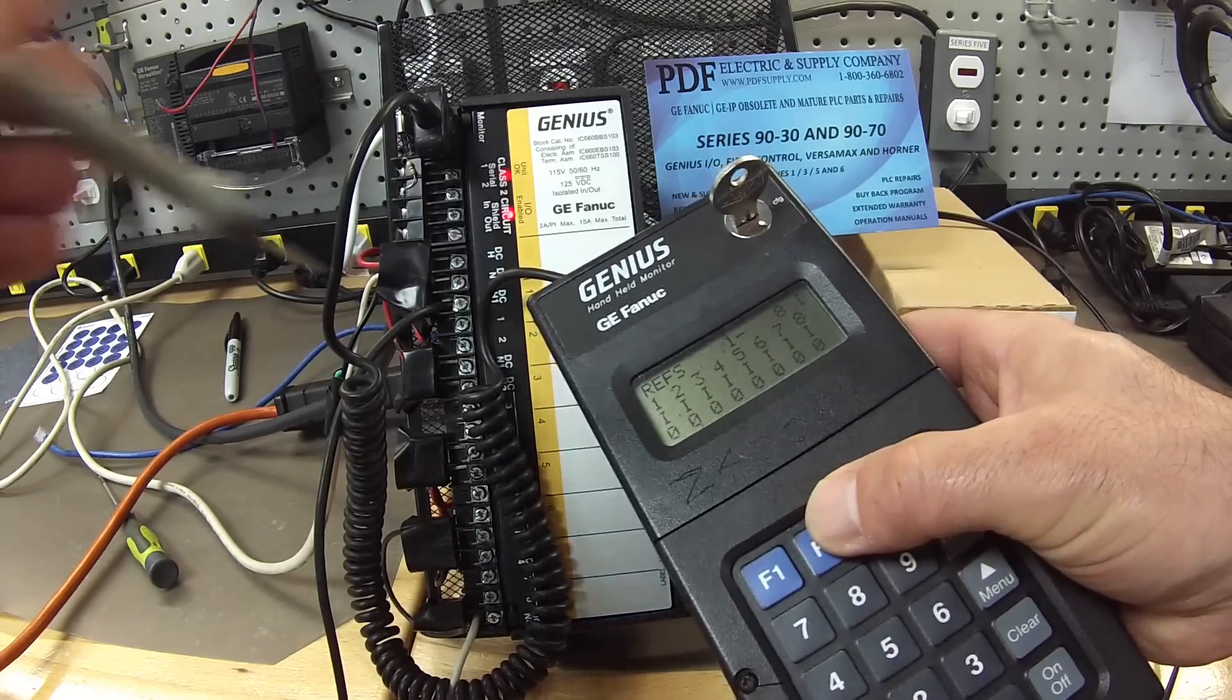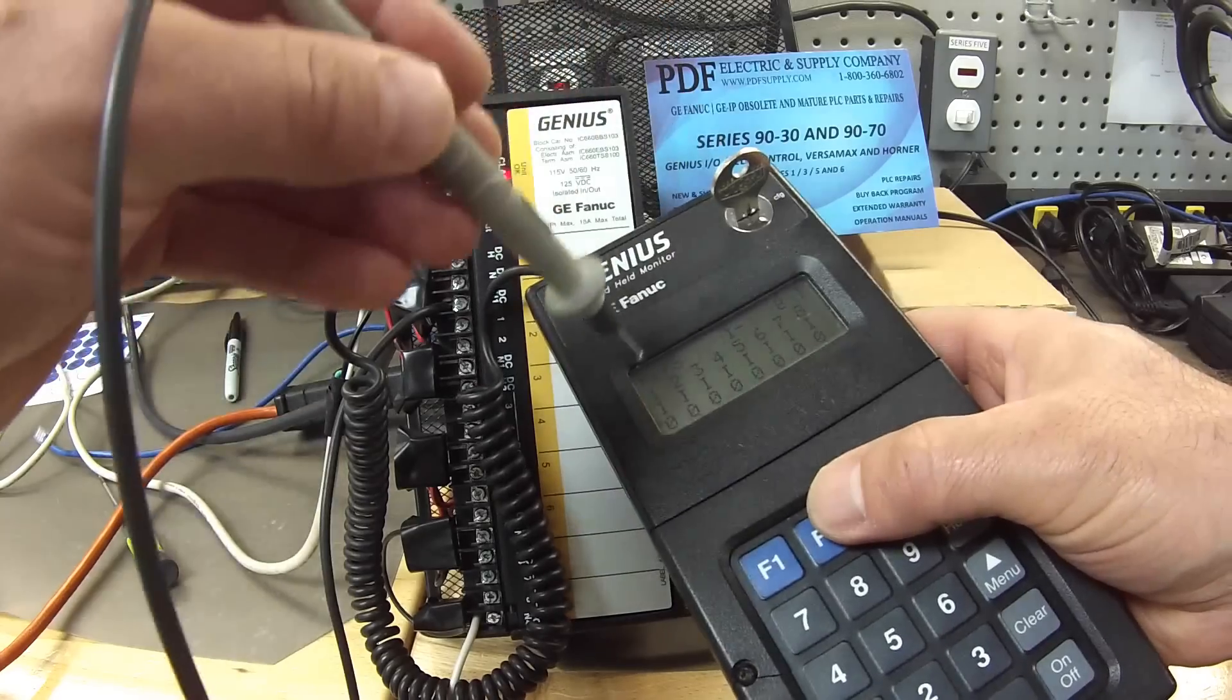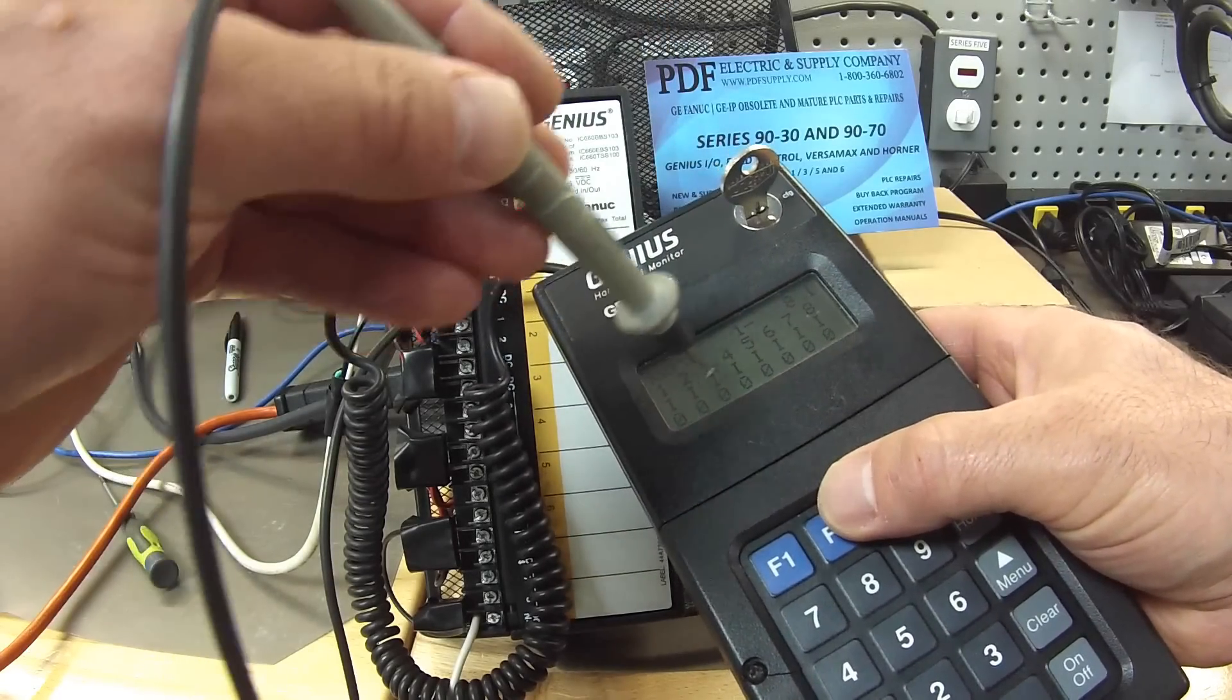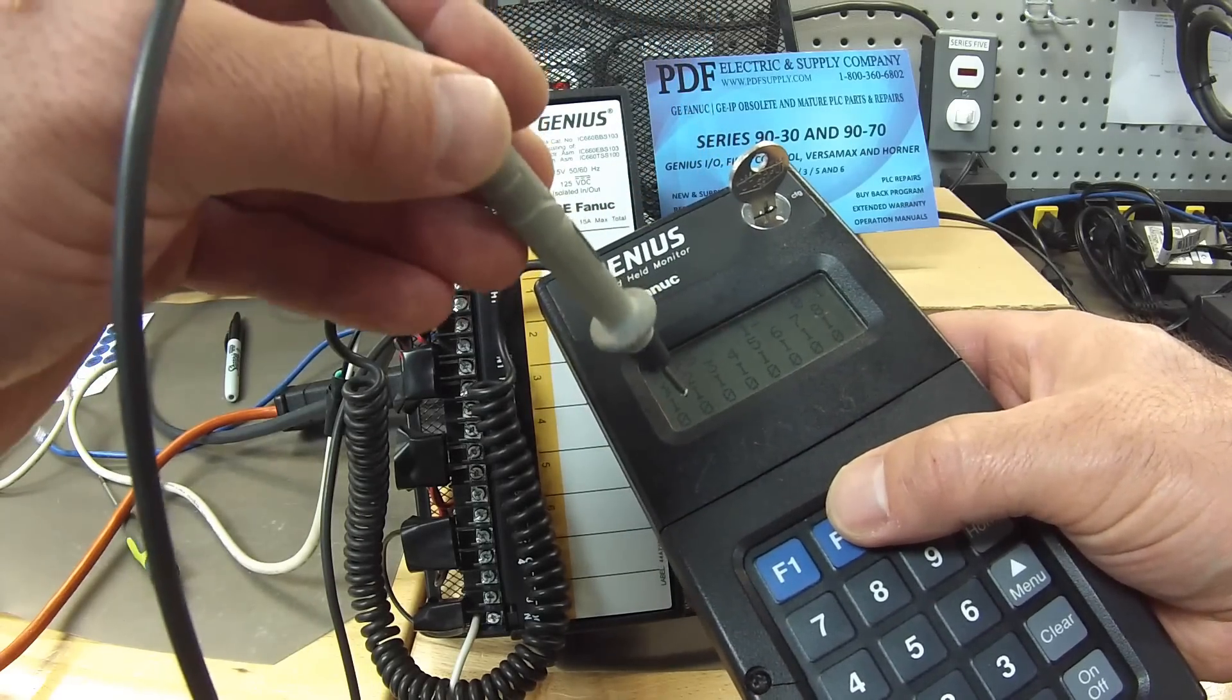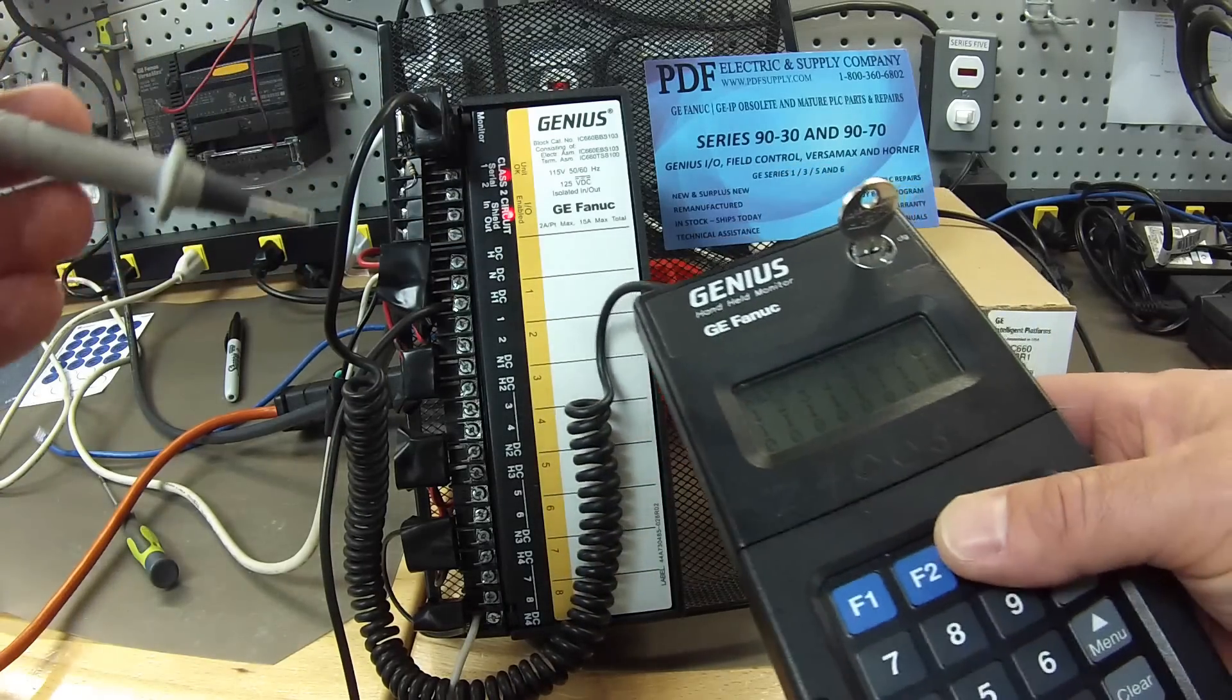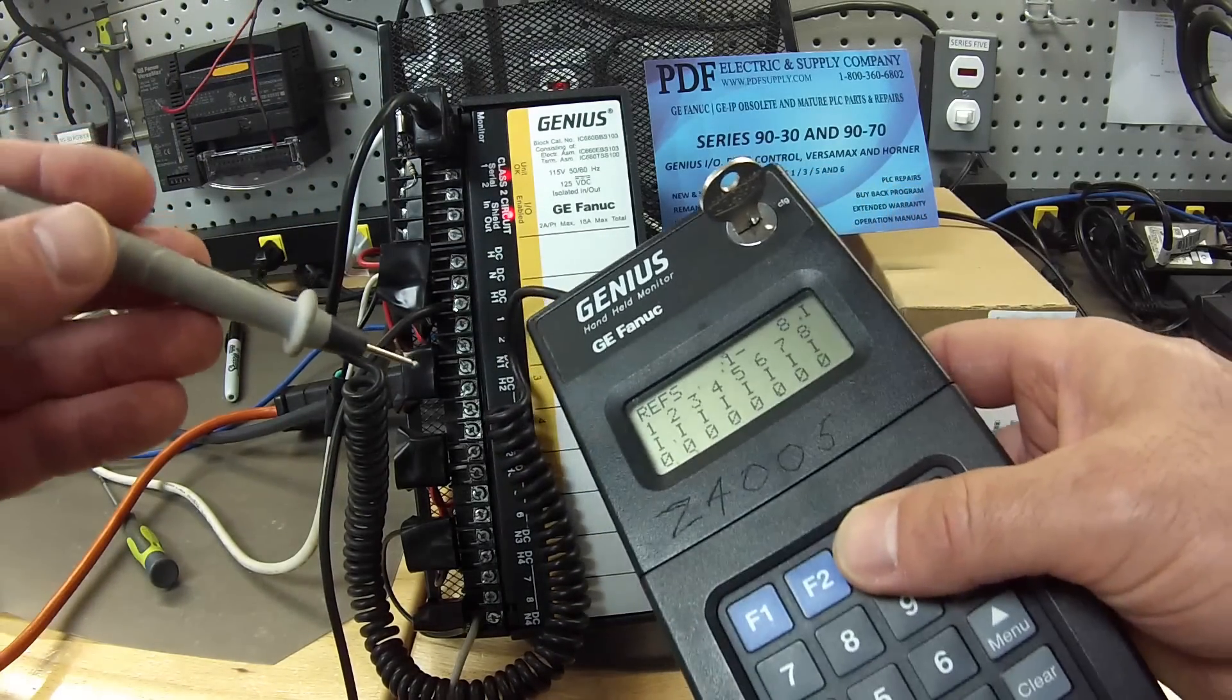This is going to show you one through eight, inputs one through eight, and the zeros are the current status of that bit. They're not on, so they're a zero. When they turn to a one, that means they're on.